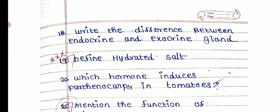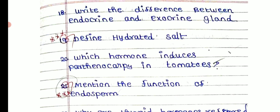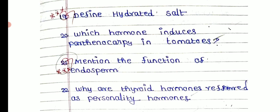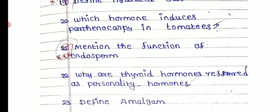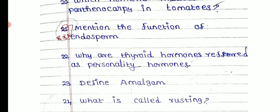Write the difference between endocrine and exocrine glands. Define hydrated salt. Which hormone is induced for parthenocarpic tomato? Mention the functions of endosperm.